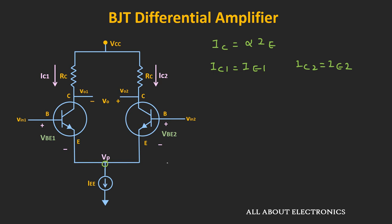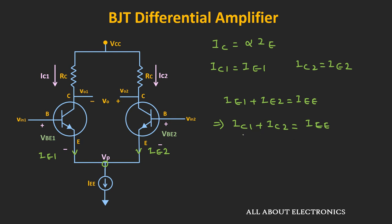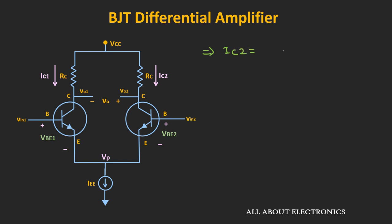Applying KCL at this node, Ic1 plus Ic2 equals Iee. Substituting the value of Ic1 into this expression to get Ic2: Ic2 times e to the power Vid divided by Vt, plus Ic2, equals Iee. Rearranging, collector current Ic2 equals Iee divided by 1 plus e to the power Vid divided by Vt.